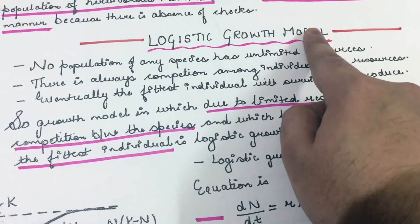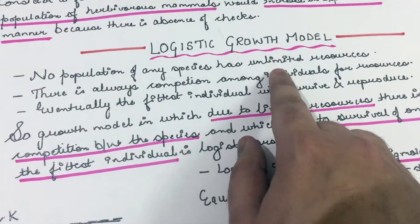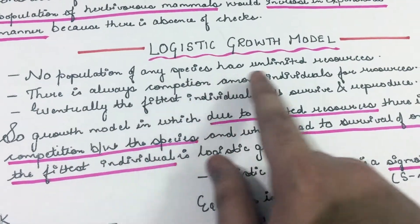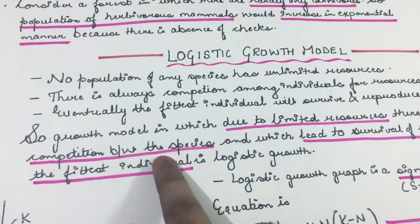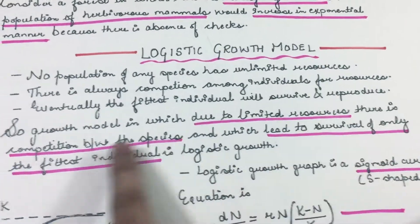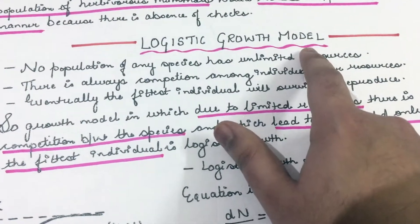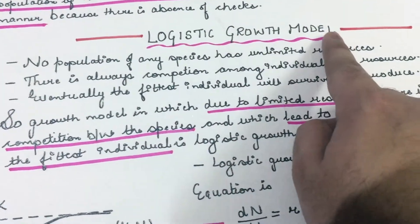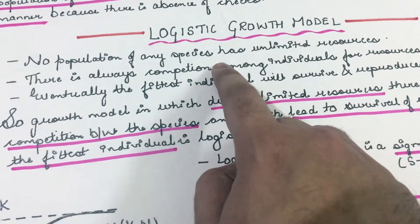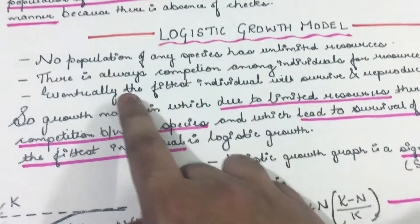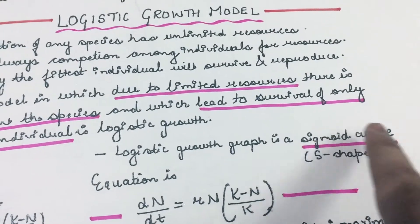Now let us look at the logistic growth model. We know that no population has unlimited resources, so there is always competition among individuals for resources, and eventually only the fittest individuals survive. A growth model in which, due to limited resources, there is competition between individuals leading to survival of the fittest is called the logistic growth model. In logistic growth there are limited resources, competition among individuals, and only the fittest survive.